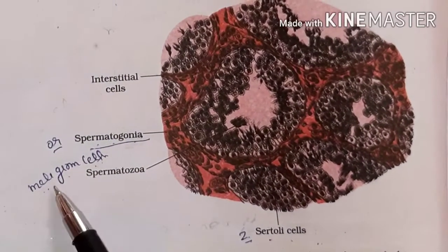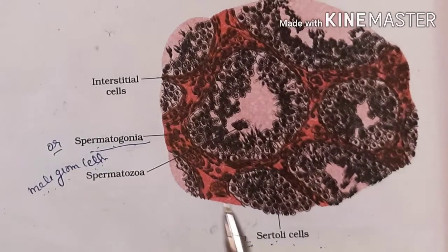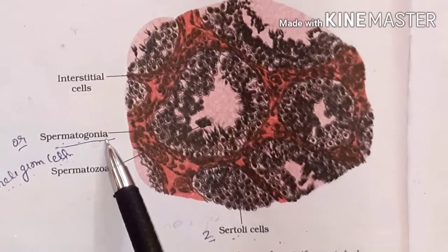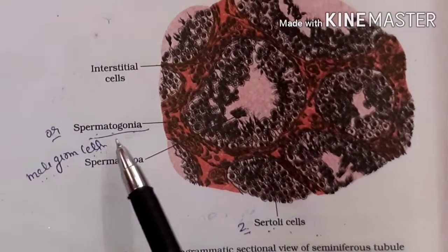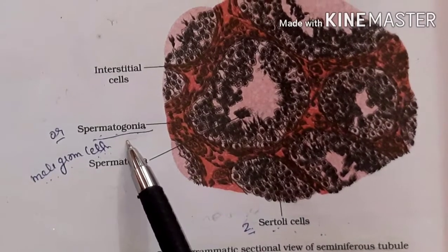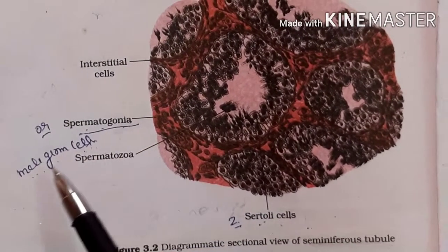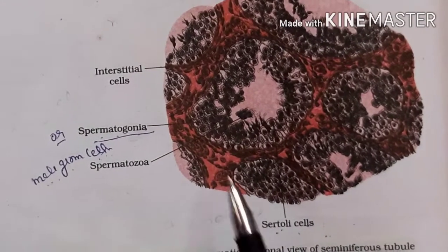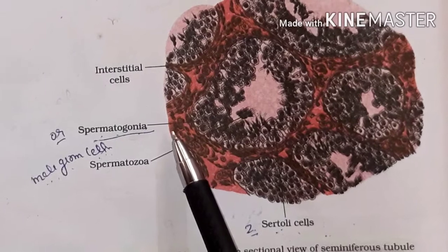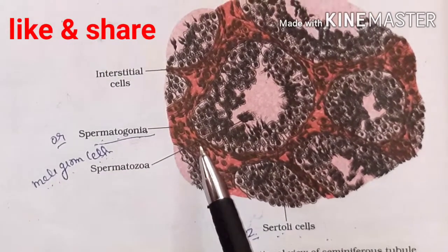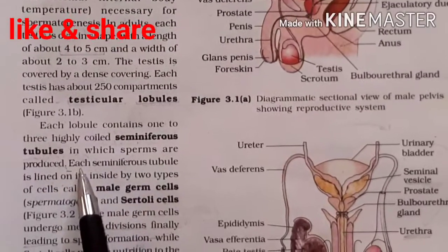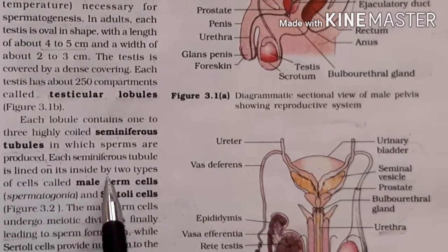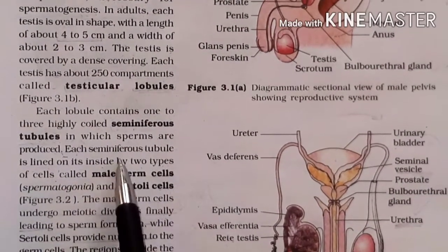The first cell type — male germ cells or spermatogonia — undergo meiotic division inside the seminiferous tubules and produce sperm. The second cell type — Sertoli cells — provide nutrition to the germ cells.